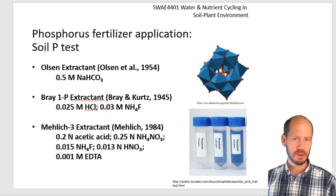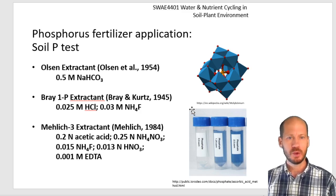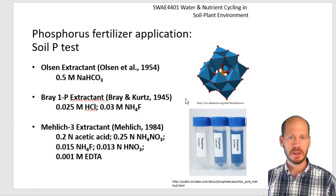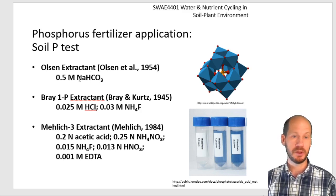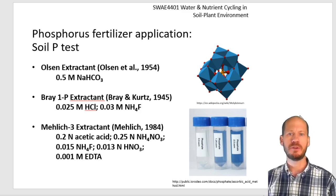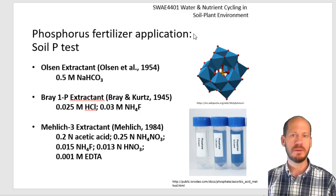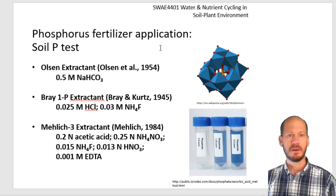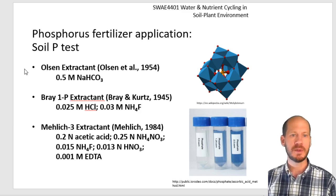When we quantify phosphorus from solutions, we weigh a certain amount of soil, add the extractant solution — in the case of Olsen extract that's sodium hydrogen carbonate at 0.5 molar, pH 8.5 — and shake the soils with this extractant for a given amount of time. We then filter and the filtrate is used to quantify phosphorus. If you look at the video about moly blue phosphorus, you will see the full explanation about how to quantify phosphorus in these solutions.